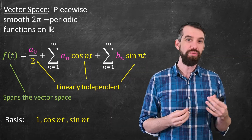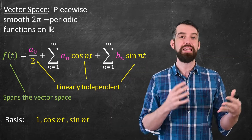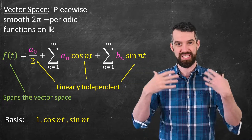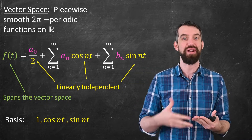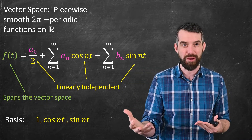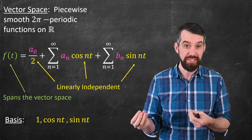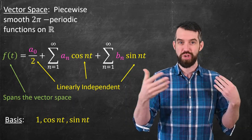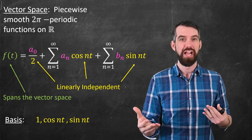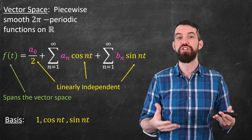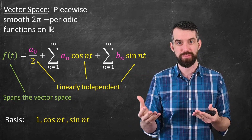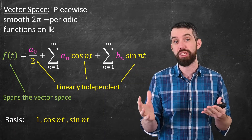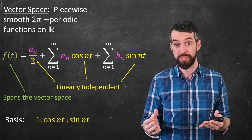There is a little bit being swept under the rug here — for example, these sums are infinite sums, which is not the same as the finite linear combinations we talked about before, and there are issues to do with convergence. But the big idea, the analogy, definitely holds.